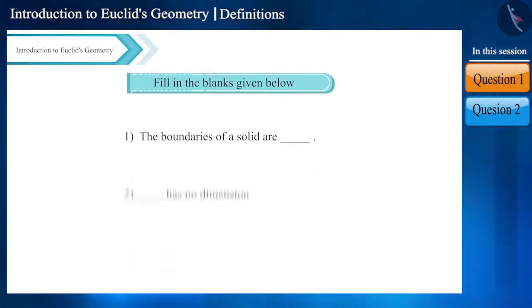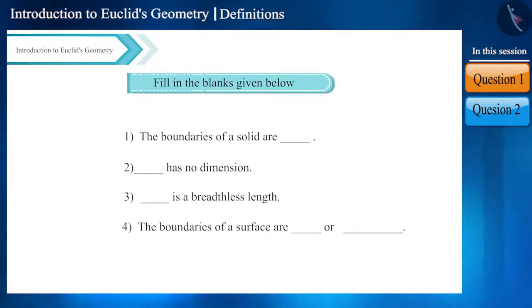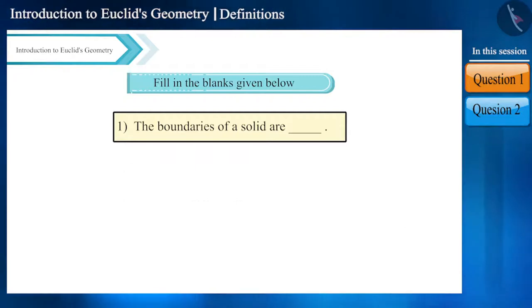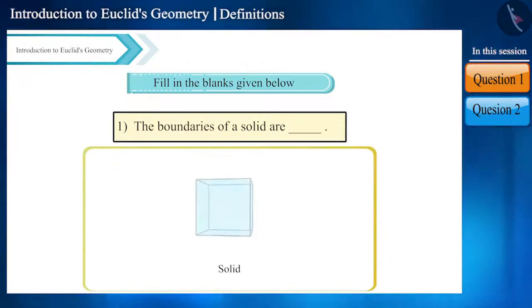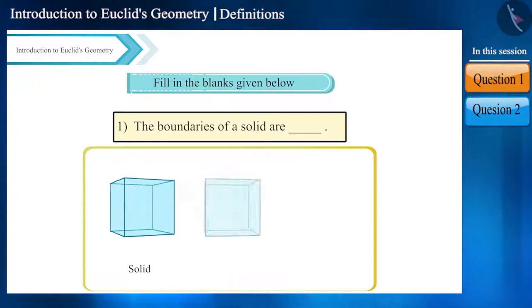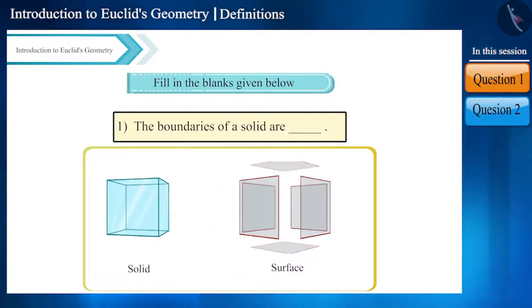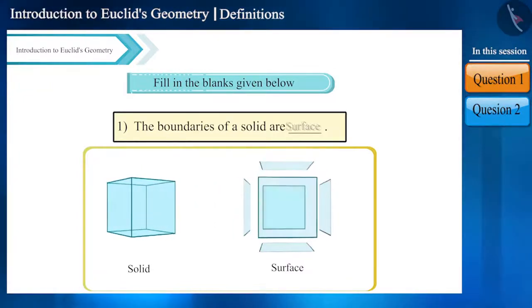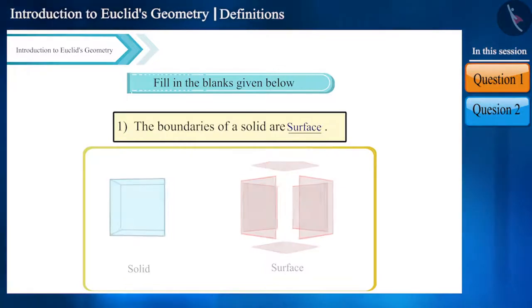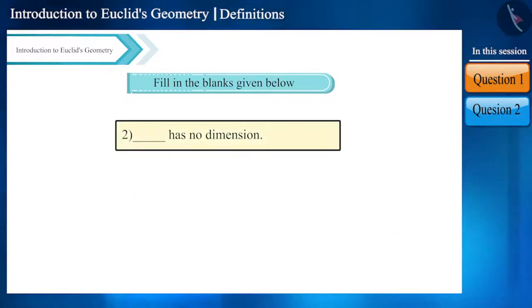Look at the first blank. Here we are talking about the boundaries of a solid, and the boundaries of a solid is a surface. Hence the answer is surface. In the second blank we are referring to dimension.